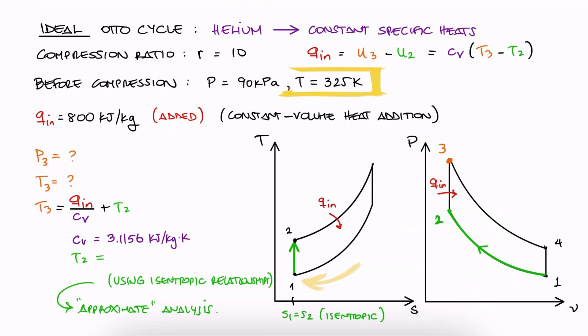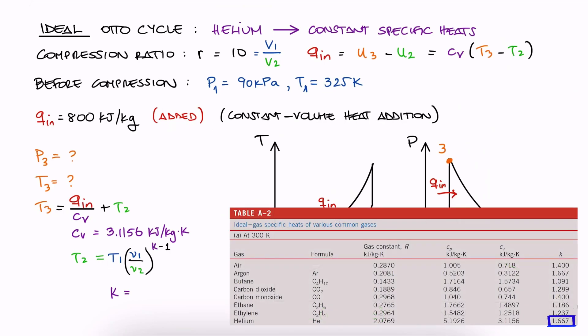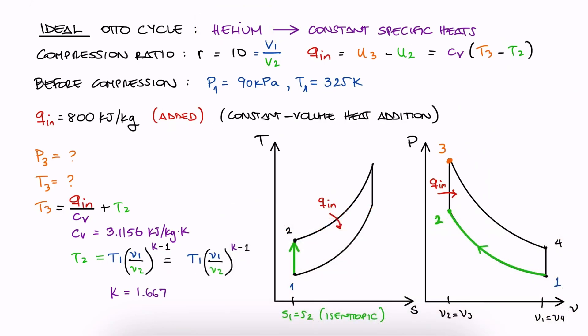What we have in this case is the temperature at 1 and the ratio between volumes, which means we can use the temperature to volumes relationship. We solve for T2 and notice that we need K as well. We look up the K ratio for helium, we substitute it and the volume ratio, and with the given temperature 1, we find T2.